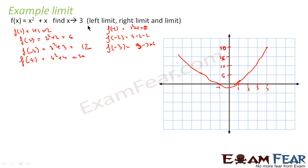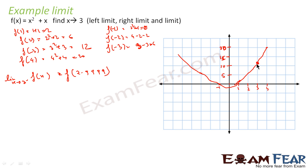Now we have to find the limit at x equal to 3. x = 3 is at this point, which is nothing but 12. This is our point. Now we approach this point from the left-hand side. So when I say limit of f(x) as x → 3⁻, that is nothing but f(2.999). Because I am taking a value near to 3 but less than 3. That is 2.999² + 2.999, which gives approximately 11.999 — almost equal to 12.